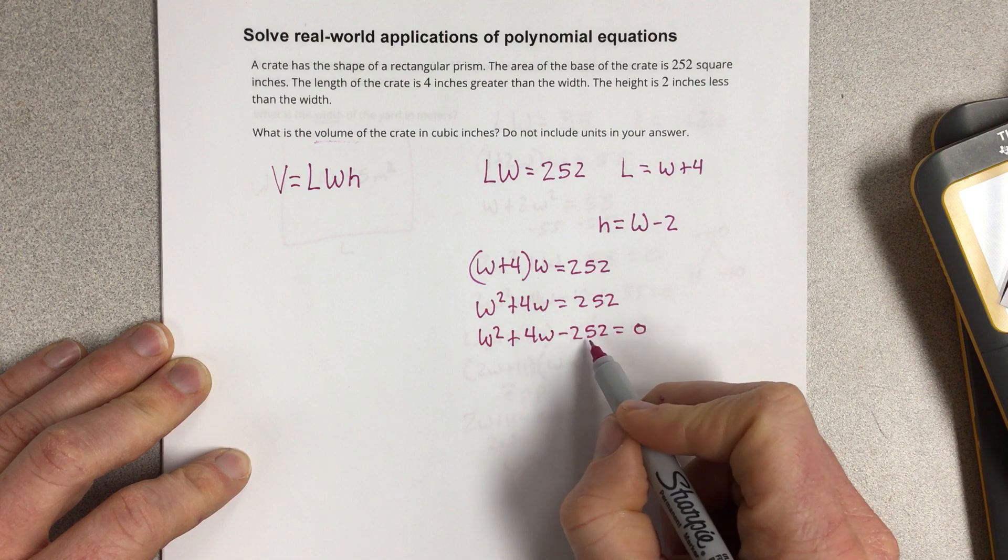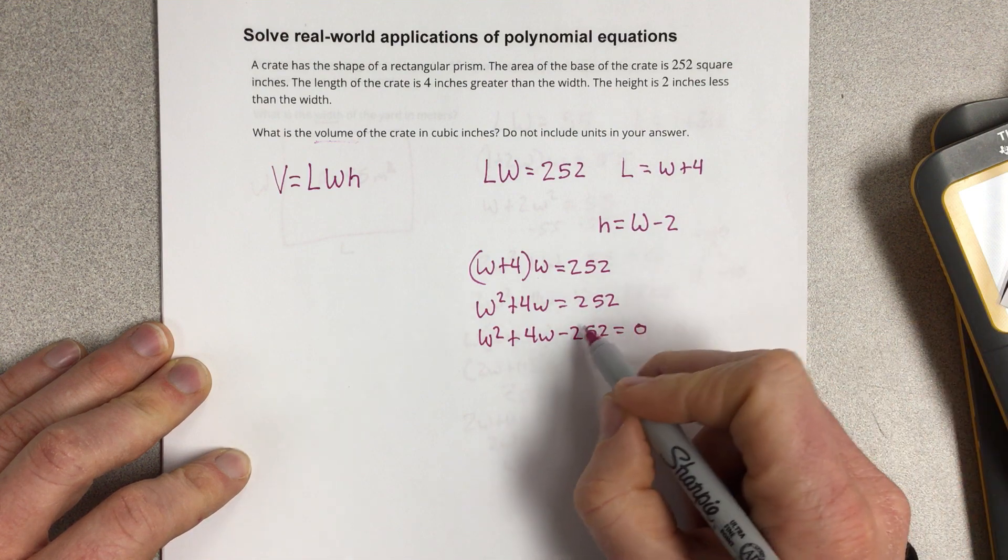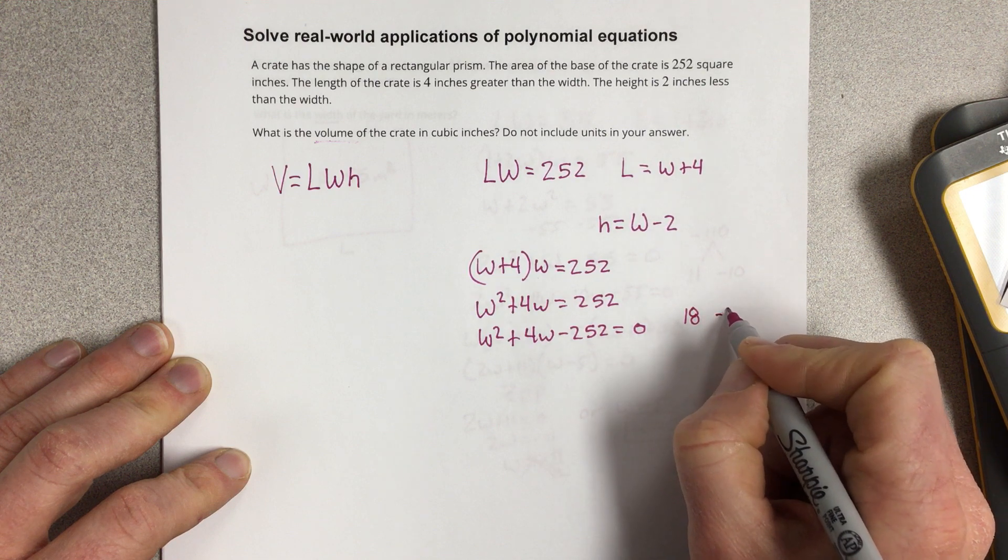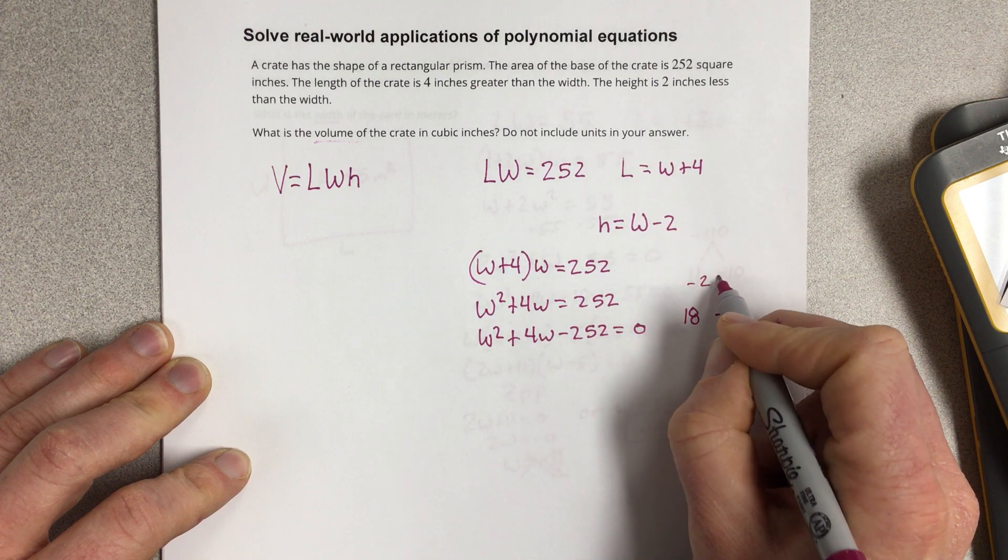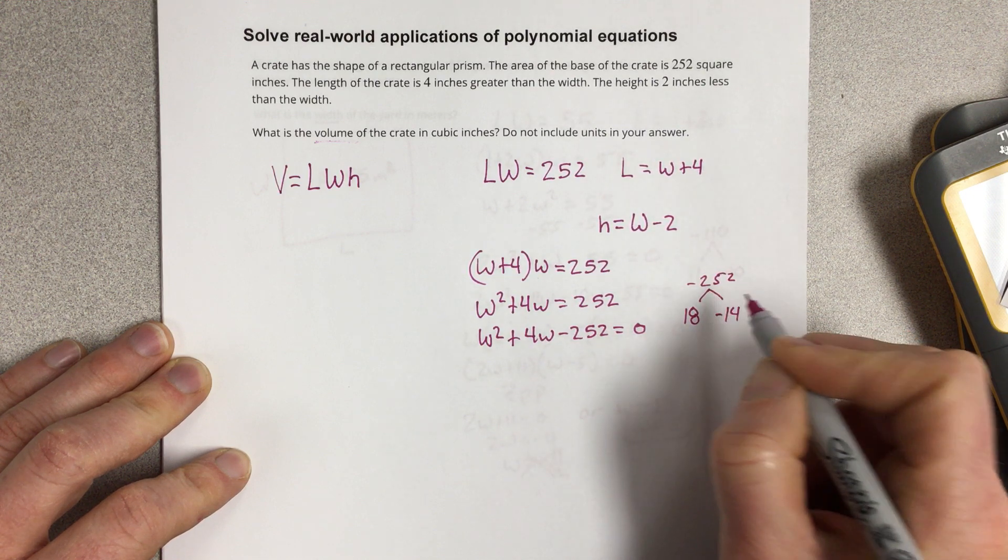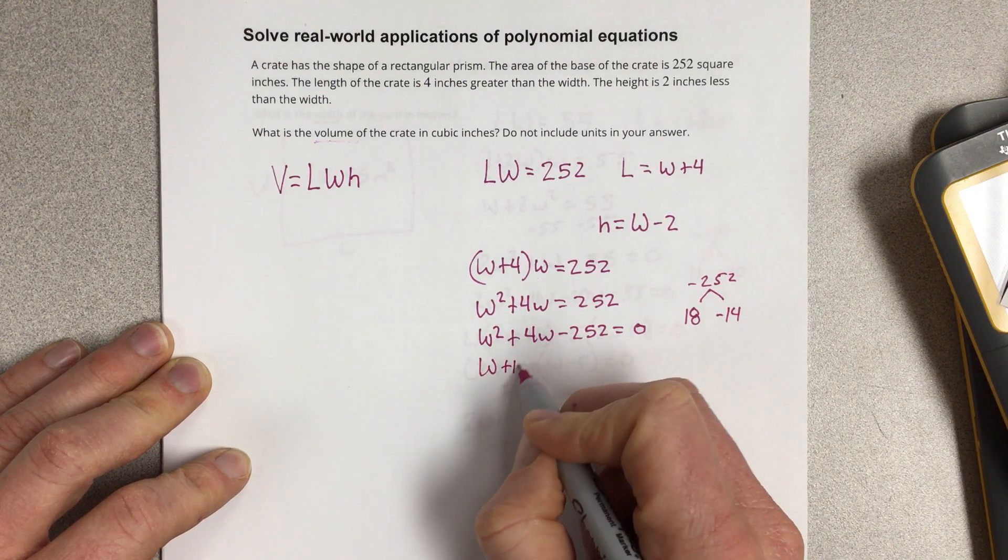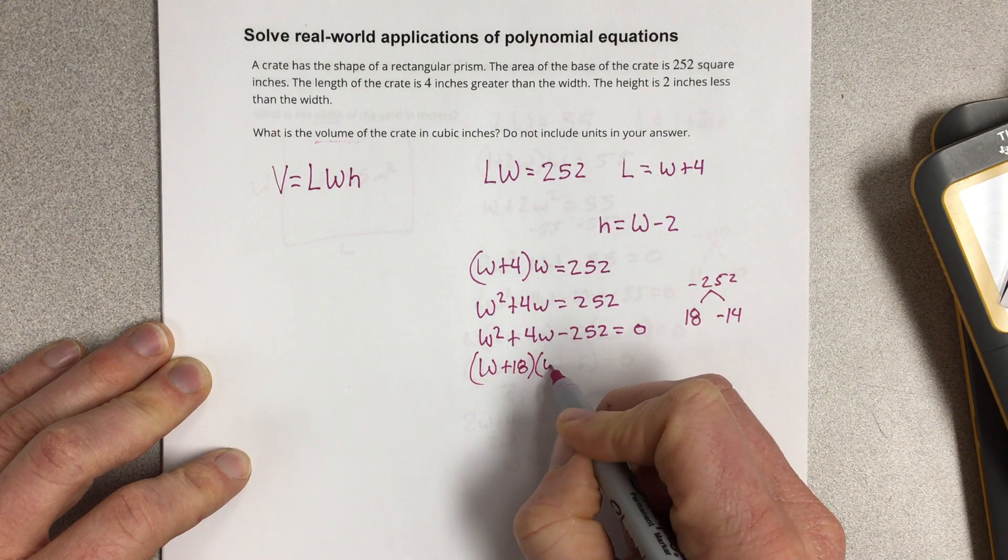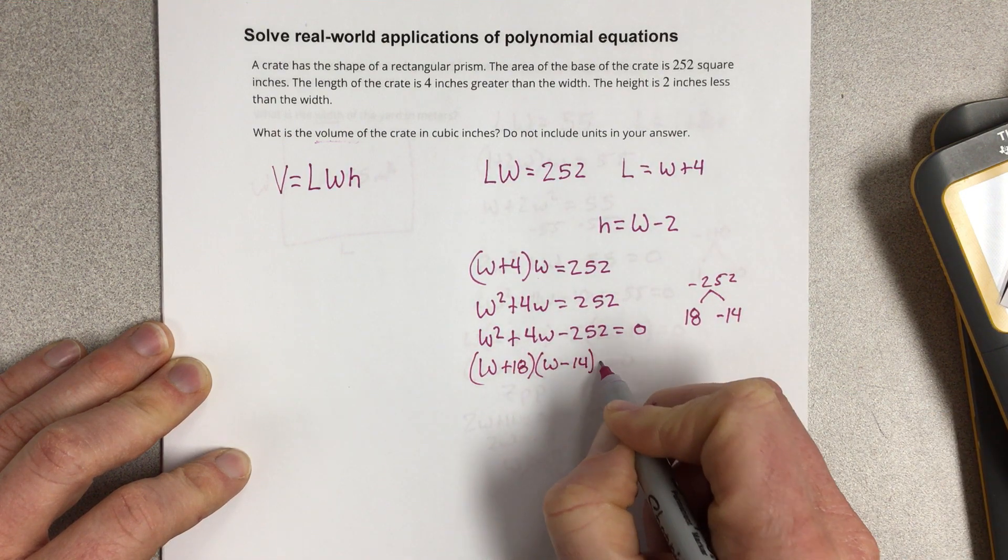Now we're going to look for factors of negative 252. Factors of negative 252 would be 18 and negative 14. So we can write that as W plus 18 times W minus 14 equals 0.